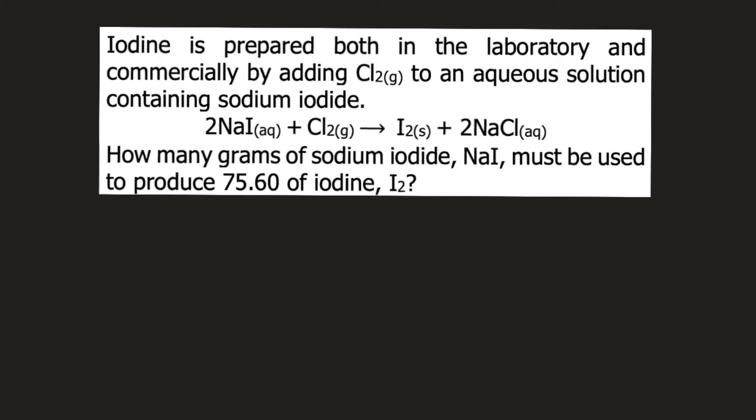Iodine is prepared both in the laboratory and commercially by adding chlorine gas to an aqueous solution containing sodium iodide. Shown below is the balanced chemical reaction. How many grams of sodium iodide must be used to produce 75.60 grams of iodine?